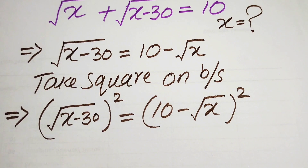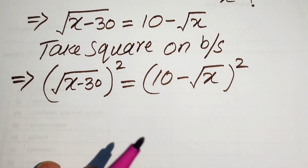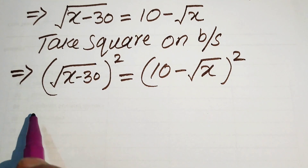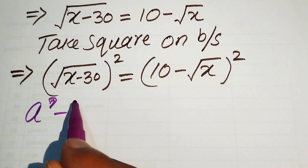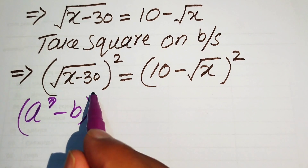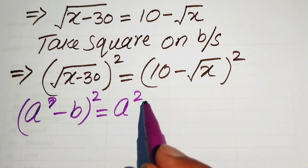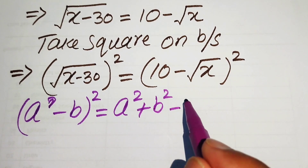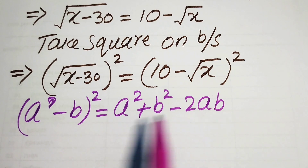In the next step, we apply the algebraic identity on the right hand side. We know that (a minus b) whole squared equals a squared plus b squared minus 2ab.